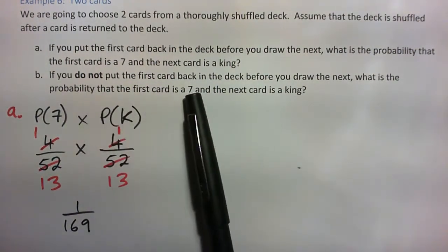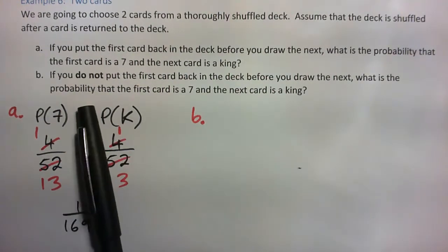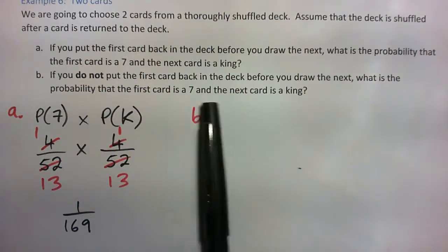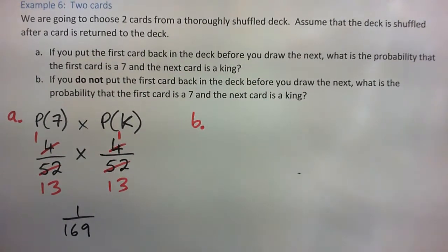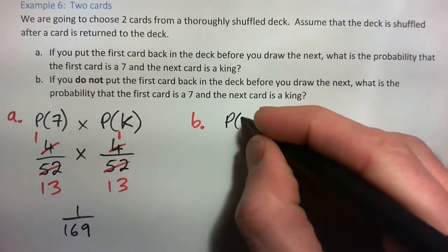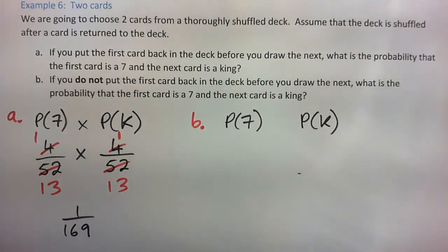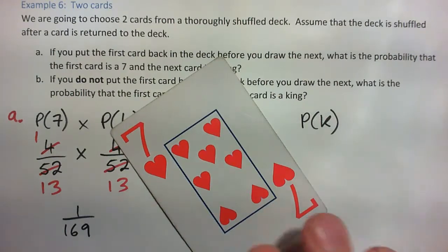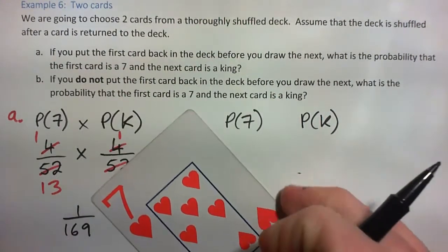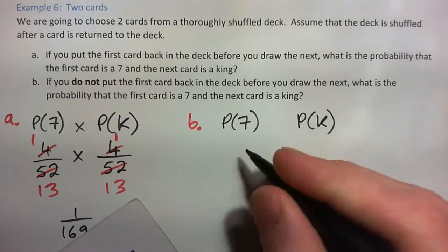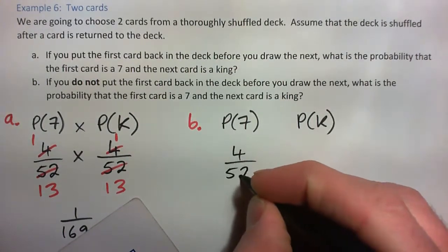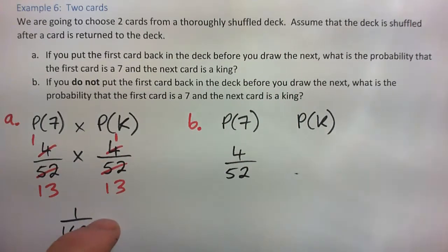Part B: if you do not put the first card back in the deck before you draw the next, what is the probability that the first card is a 7 and the next card is a king? So we get the probability of a 7 and then the probability of a king. The deck is shuffled and we draw out a 7. The chances of getting that 7 out of 52 — there are 4 sevens out of 52, or 1 out of 13.